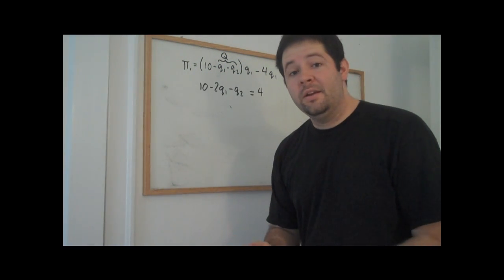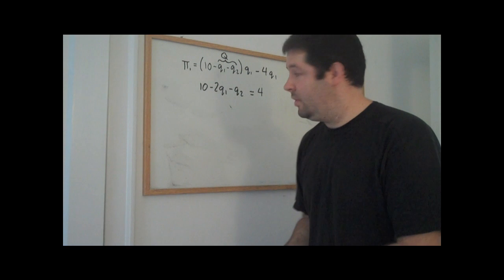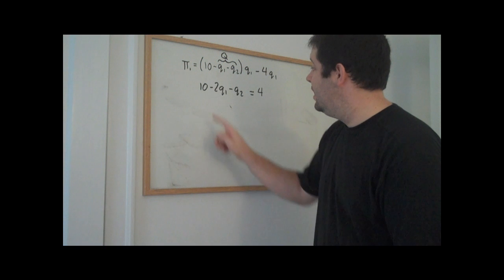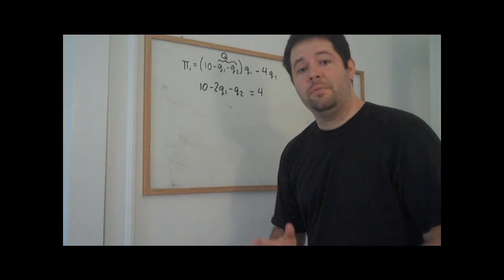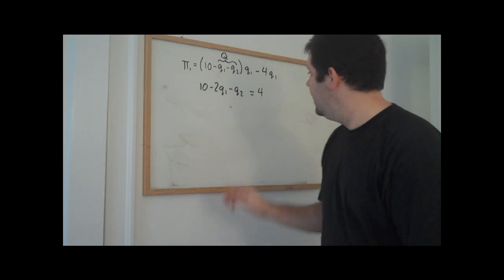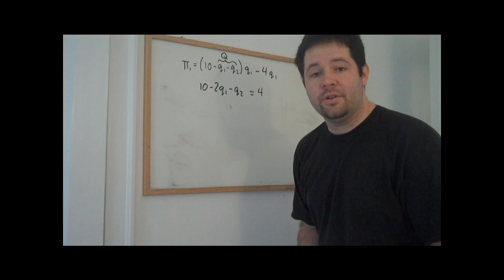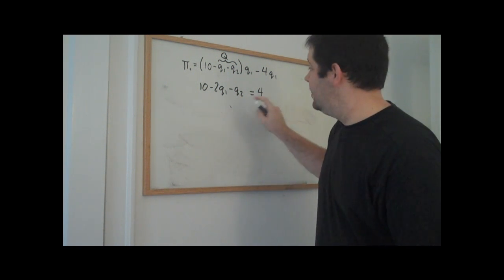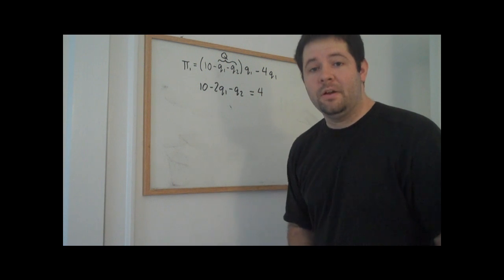What I've done here for the non-calculus folks out there is I've taken the derivative in a way that has an interpretation. The left-hand side is going to be the marginal revenue for the firm, and the right-hand side is going to be the marginal cost. You can see that this is the derivative of the cost function, this is the derivative of the revenue function.